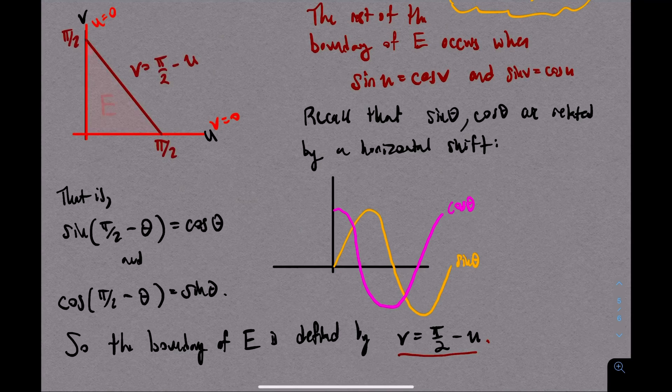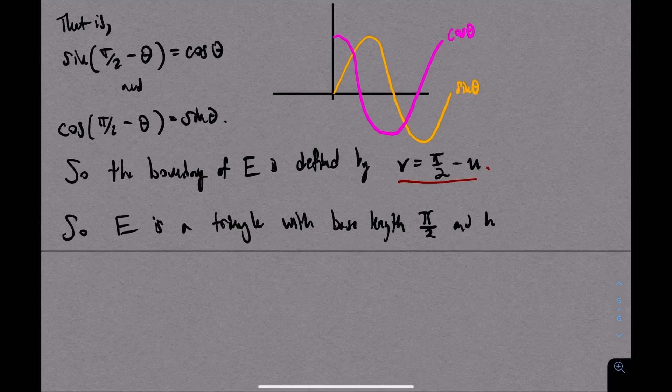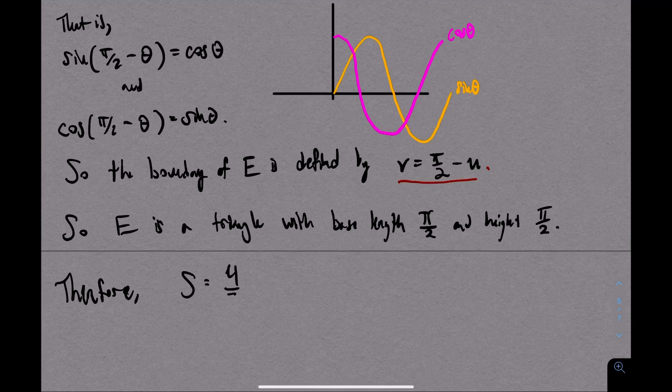And if I sketch that on my picture here, we get a line with negative slope which caps off this region as a triangle. The u and v intercepts of this red line are both at pi over 2. So here we go. E is a triangle. It's got a base of length pi over 2 and a height of pi over 2.